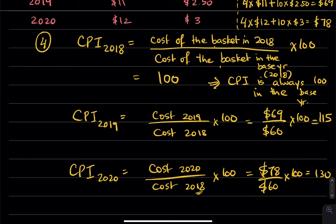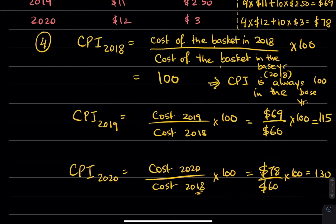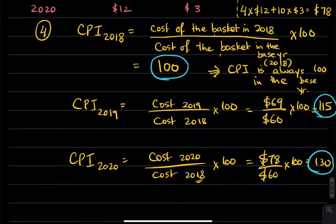So, notice we have three numbers. We have CPI in the base year, which is 100, CPI in 2019, which is 115, and CPI in 2020, which is 130. So, we've calculated CPI, or the average level of prices for consumers in all the years that were given to us.